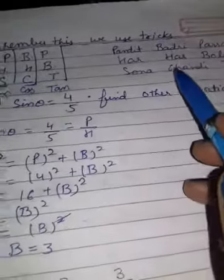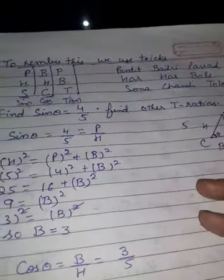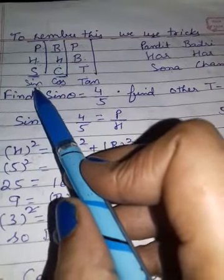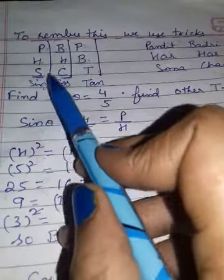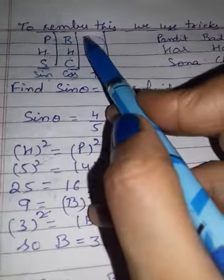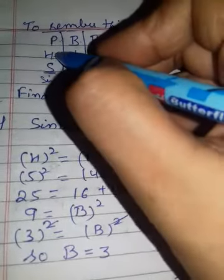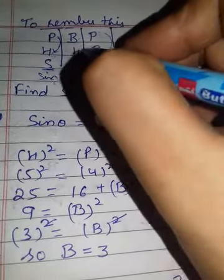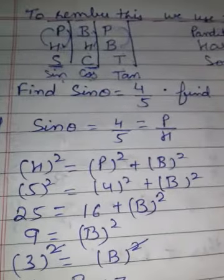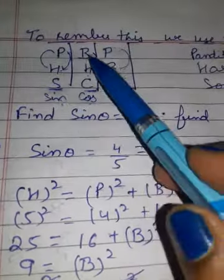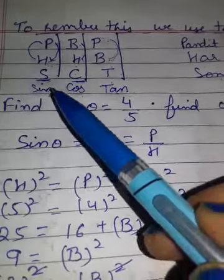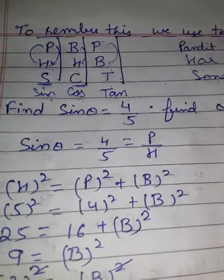If you learn Sine, Cos, Tan, then you know Sine's reciprocal can be written as Cosecant by taking H upon P, Secant as H upon B, and Cot as B upon P. You will take the reciprocal for Cosecant, Secant, Cot.